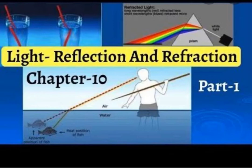This chapter is a part of ray optics of physics and in this chapter we are going to study in detail two phenomenons which are related to light, that is reflection and refraction. So we can say that this chapter is basically divided into two parts. In the first part we will study reflection of light and in the second part we will study refraction of light.